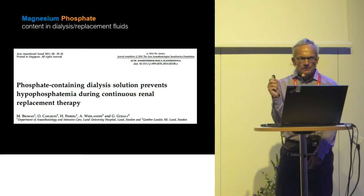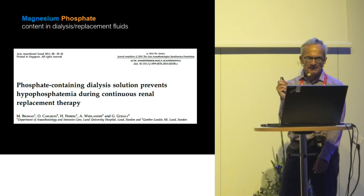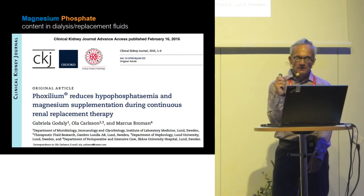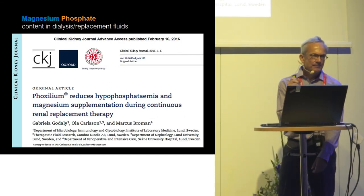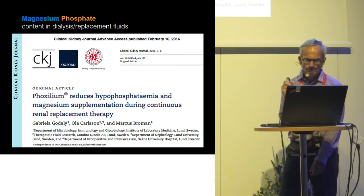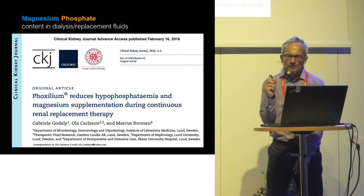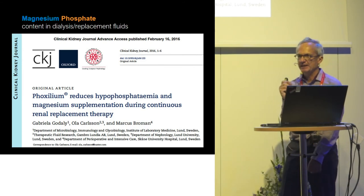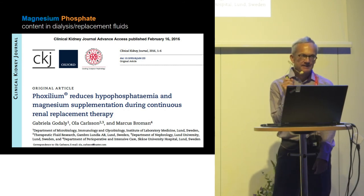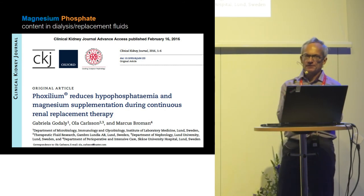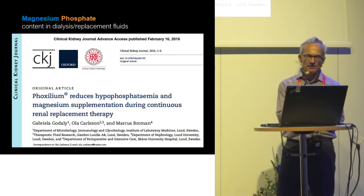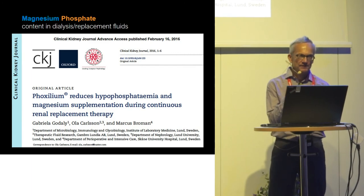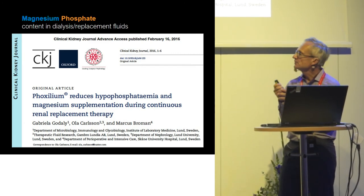In previous works we have shown that in dialysis fluids, the most optimal phosphate level seems to be between 1.0 and 1.2, and the most optimal magnesium level is between 0.5 and 0.6. When we have these concentrations in the dialysis fluids, we reach the best blood serum profiles in our patients during CRRT treatment.